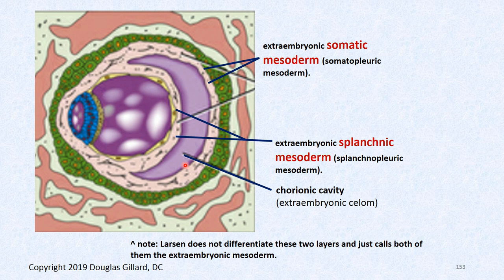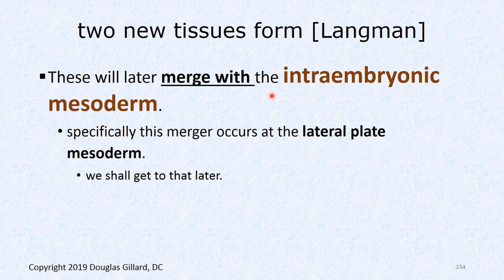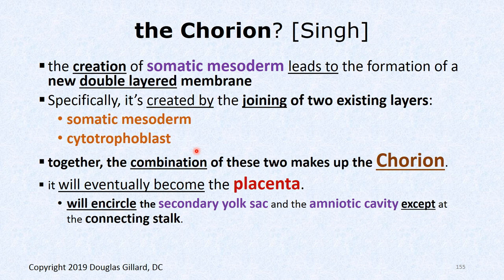According to Langman, the intra embryonic mesoderm will later merge with the lateral plate mesoderm — we'll cover that in week four. Now, what is the chorion? It's simply two layers together: the somatic mesoderm (extra embryonic) plus the old cytotrophoblast layer. When those two come together you've formed the chorion, which will essentially become the placenta.